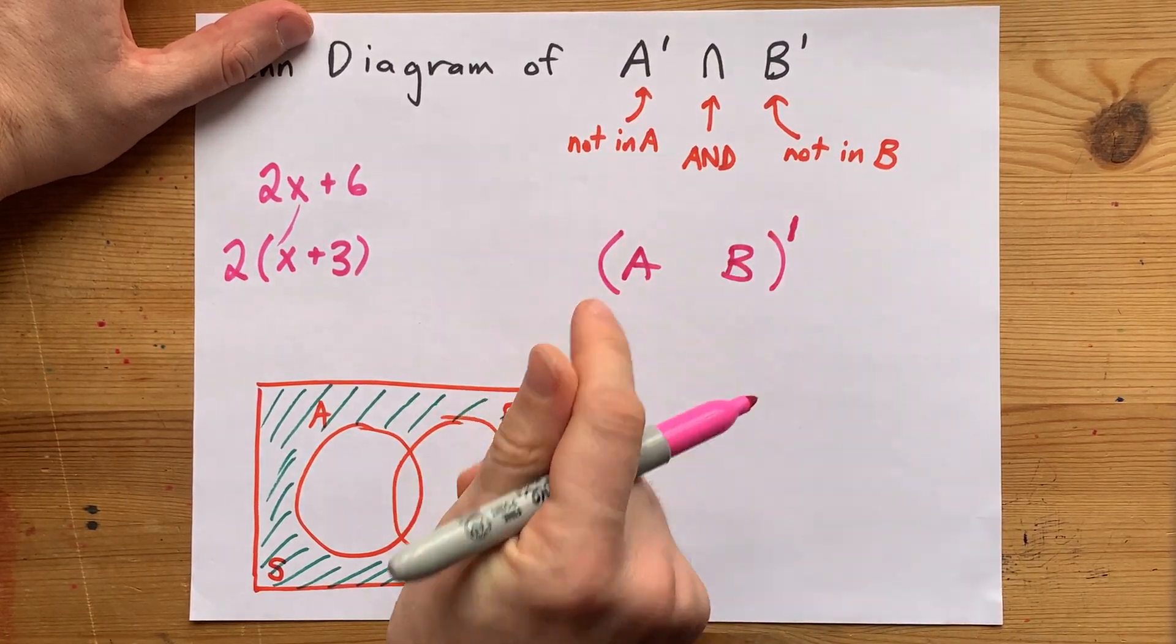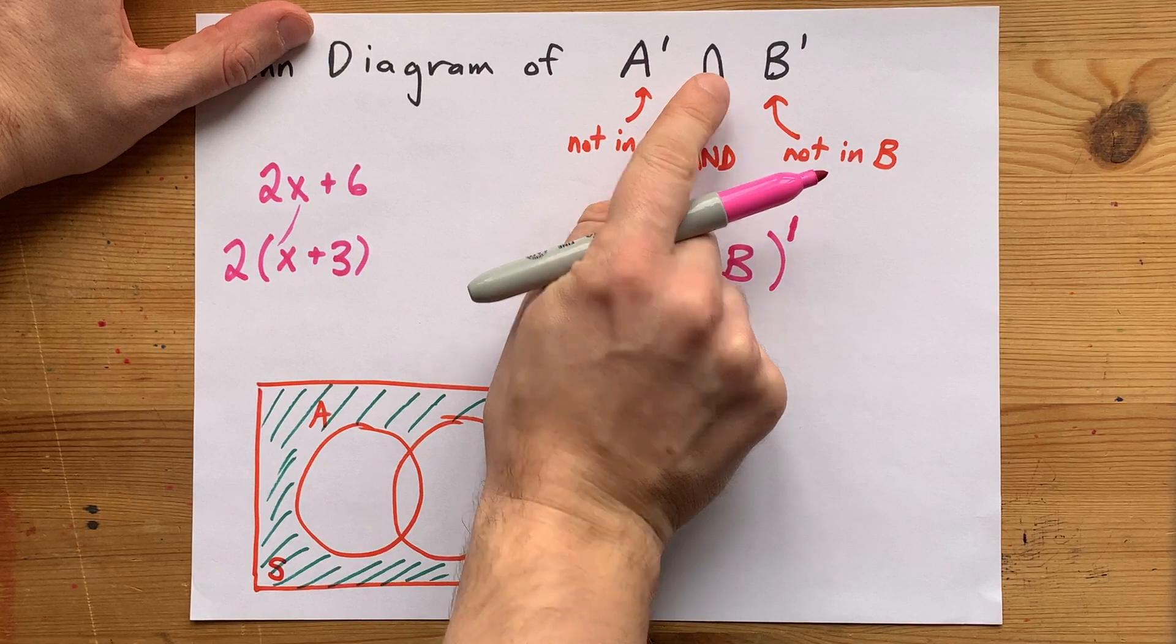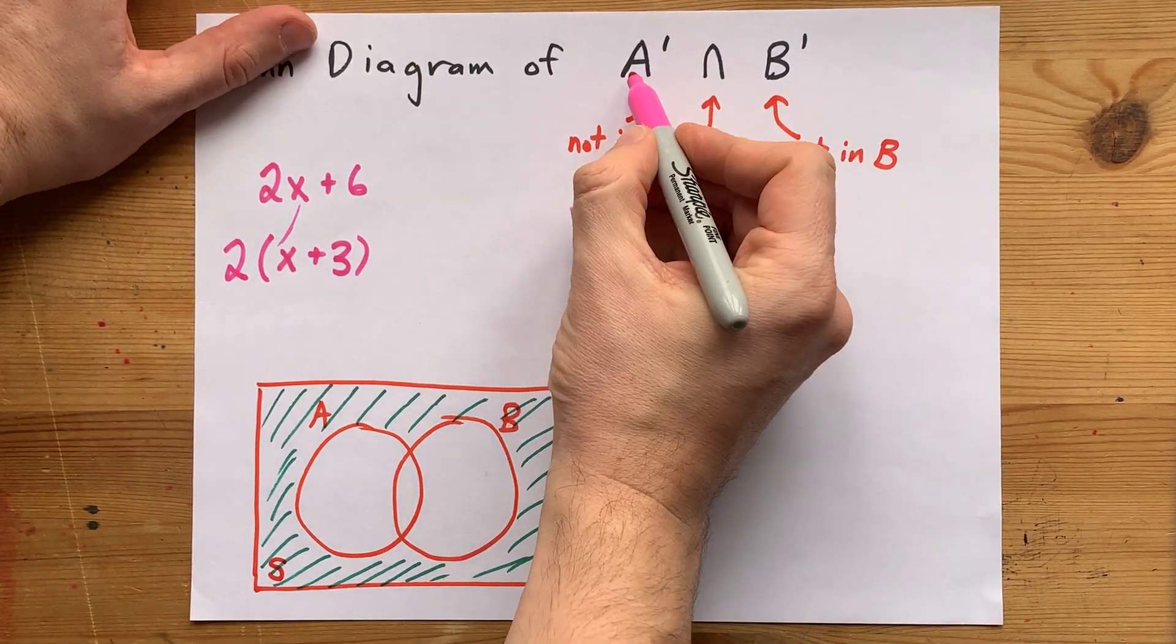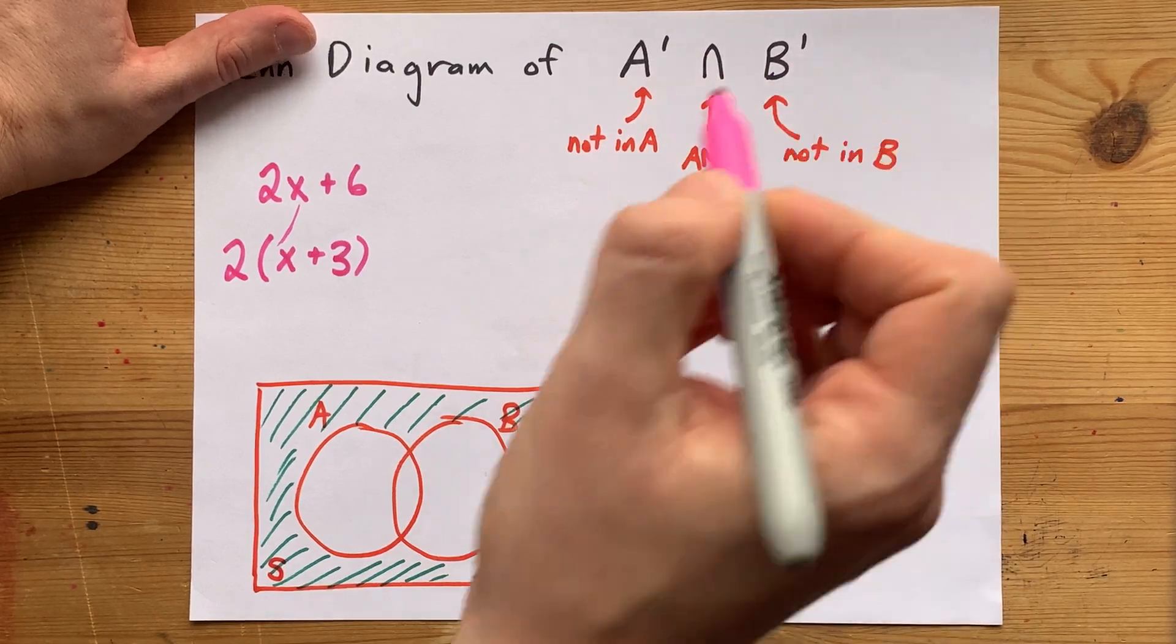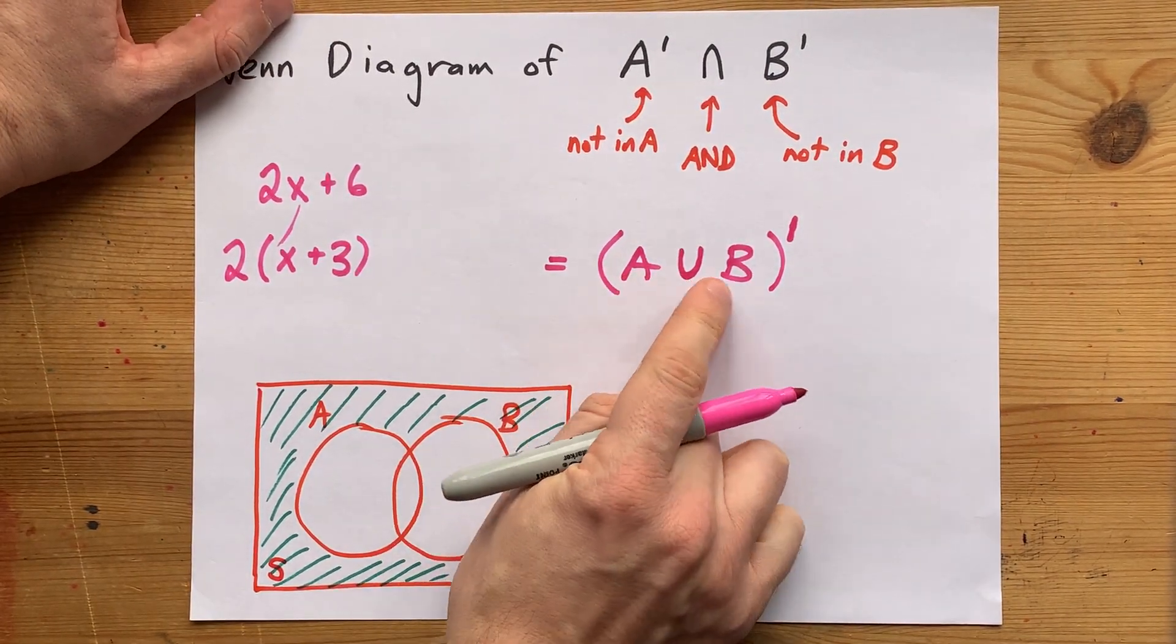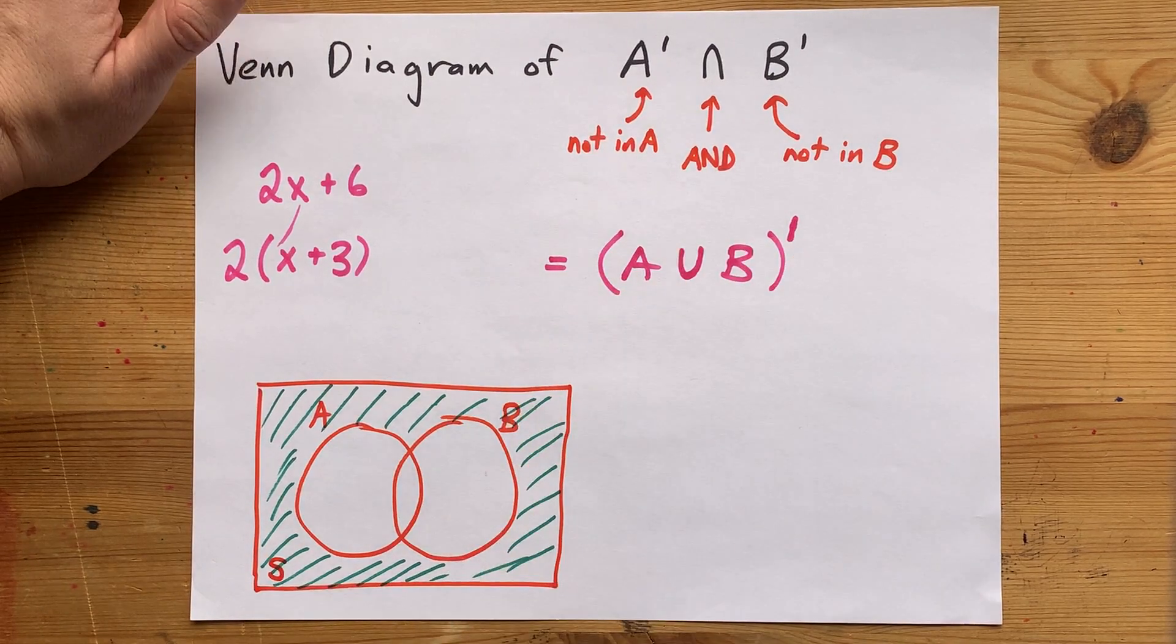The only trick is that when you do that, you have to flip this sign as well. So, A complement intersect B complement is equivalent to A union B all complemented.